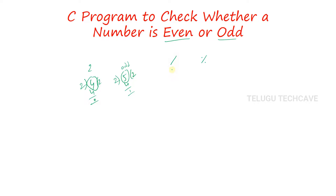So if we use slash, we get the quotient as output. And if we use modulus, we get the remainder as output.